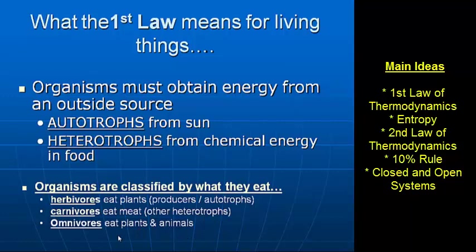Omnivores eat both plants and animals. We'll do an activity in class with a worksheet — I have an image of a boy eating a hot dog and I ask you to classify him. As a human species, collectively we are classified as omnivores. I'm aware there are vegans and vegetarians, but collectively we are classified as omnivores.